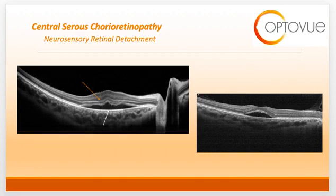Just to emphasize: on the left-hand side of the slide, the orange arrow is pointing to the neurosensory retina, and the white arrow is pointing to the RPE. Notice that the fluid is above the level of the RPE.